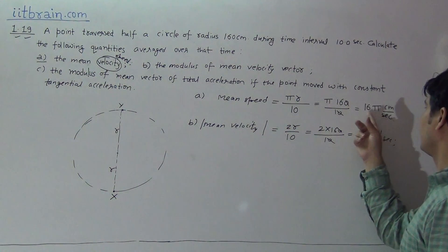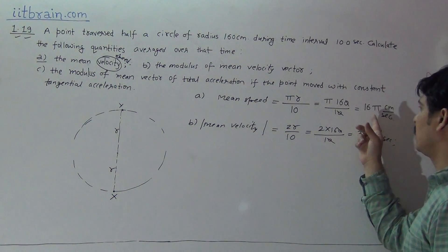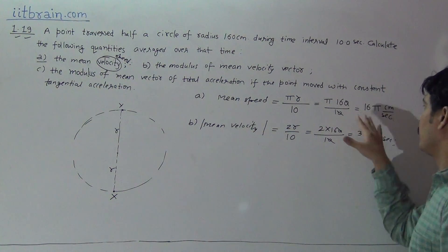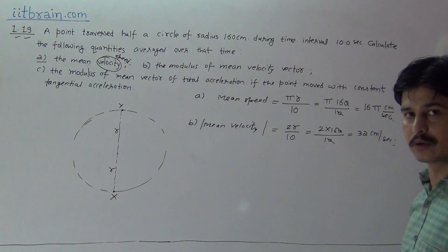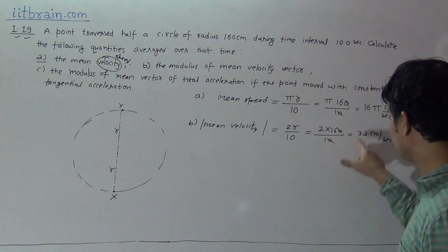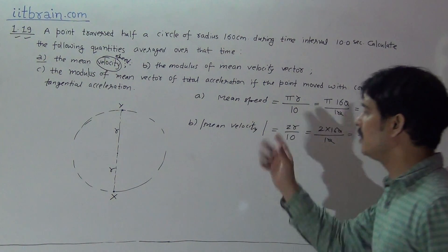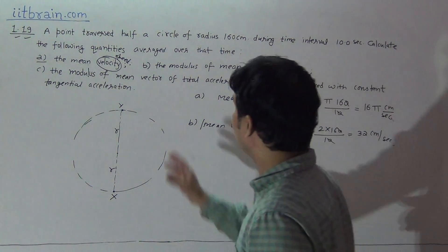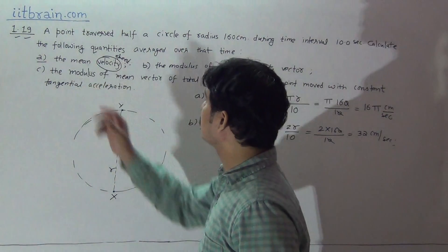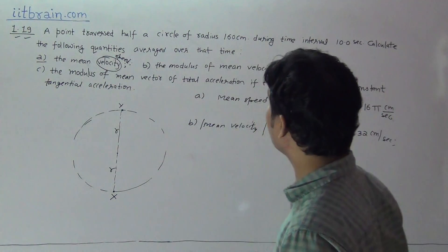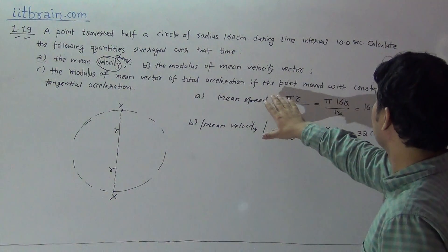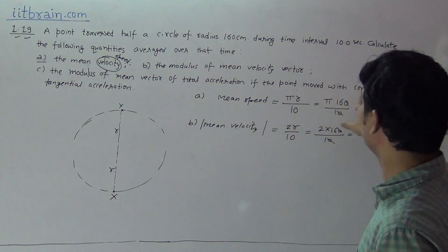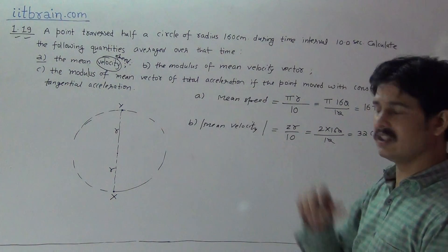The value of 16π is approximately 50 centimeters per second. So mean speed is approximately 50 cm/s and mean velocity modulus is 32 cm/s. Now for the third part: the modulus of the mean vector of total acceleration, given that the point moved with constant tangential acceleration.